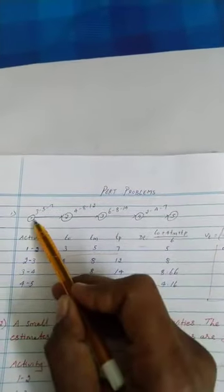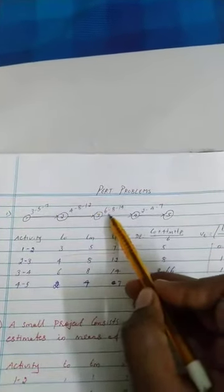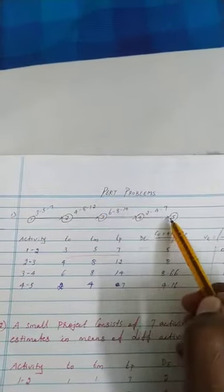Now we see the formula. See the problem. This is the problem for the activity 1 to 2, 2 to 3, and 3 to 4, and 4 to 5. This is the three different times for the particular event: 1, 3, 5, 7; 4, 8, 12; 6, 8, 14; and 2, 4, 7. This is the different times.